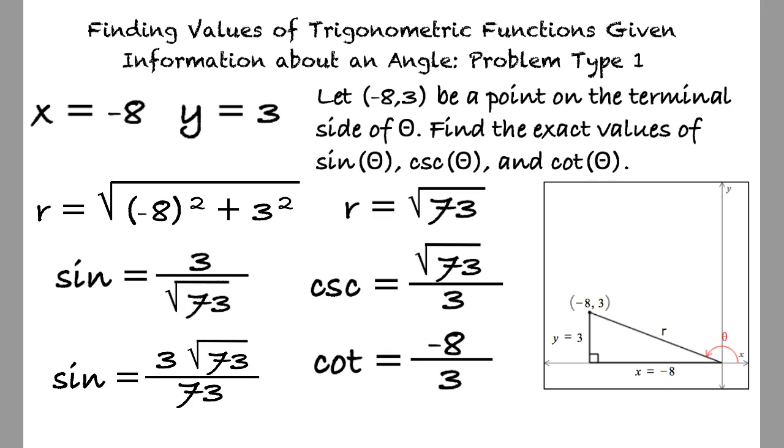Lastly, the cotangent is represented by the adjacent over the opposite side, resulting in -8 over 3.